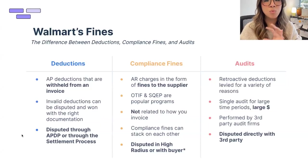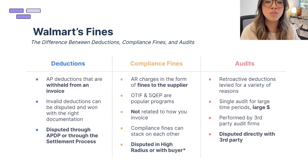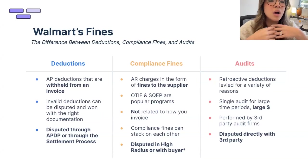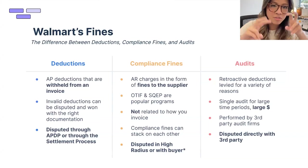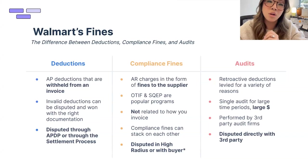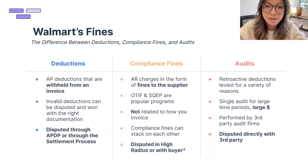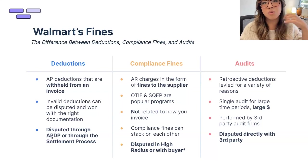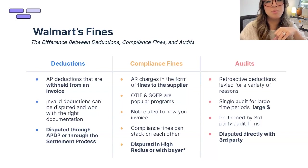Walmart really looks at revenue loss in three large buckets. The first is deductions, which we're focusing on today — usually referring to off-invoice deductions. For example, Walmart orders 100 cases, you invoice for 100 cases, but Walmart says they only received 80 or that 20 were damaged, so they won't pay you in full. Anytime they're not paying your invoice in full, that's generally an AP deduction, and if invalid, you can fight them through APDP or through the settlement process.